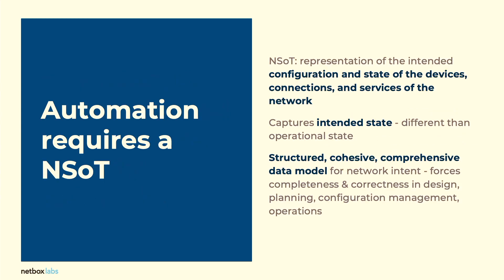So let's talk about a network source of truth. First of all, what is it? It's a representation of the intended state of your network — the state of the devices and their configurations, their connections, and the services that run on the network. This intended state is captured in the source of truth. The key thing to point out is that this is different from the actual state, or operational state, of the network.